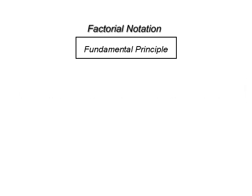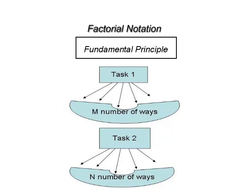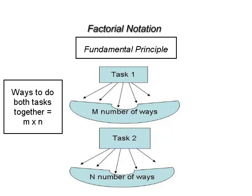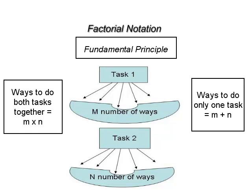Fundamental principle. If one thing can be done in m ways and after it has been done by any one of these m ways, another thing can be done in n ways, then the total number of ways of doing both the things together, that is one after the other, is m × n, and the total number of ways of doing any one of the two is m + n.